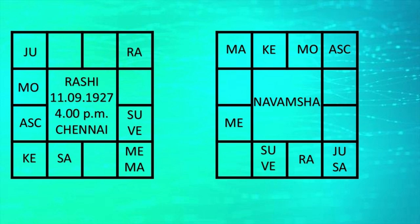In Navamsha, the person is a Gemini ascendant. In Virgo, Jupiter and Saturn reside. Even in Navamsha, the ascendant lord Saturn is Subhatwa with the conjunction of Jupiter. Saturn is in its very friendly house which is Virgo. And in the house of Taurus, Rahu is Subhatwa whose house lord is Venus. In Scorpio, Sun and Venus reside.